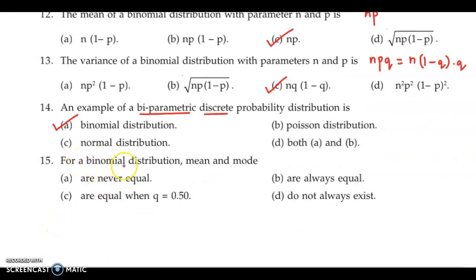Question 15: For a binomial distribution, mean and mode are never equal, they are always equal, they are equal when q equals 0.5, and they do not always exist.